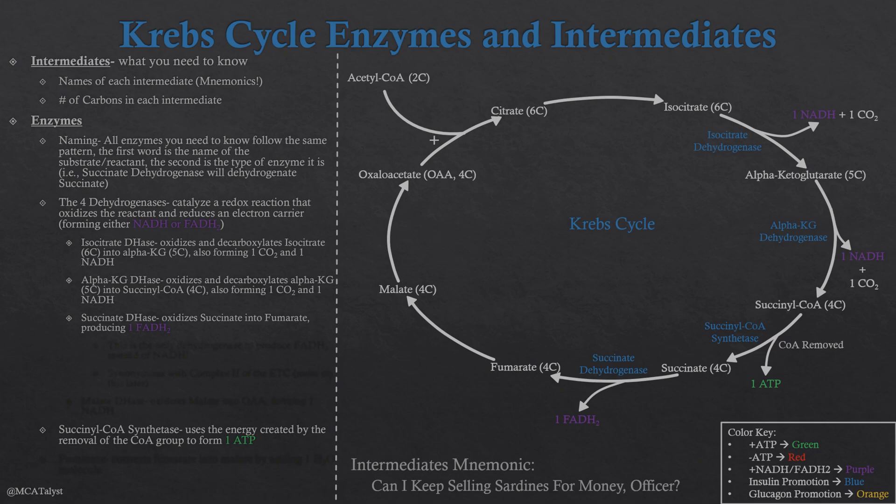Succinate dehydrogenase will oxidize succinate into fumarate, allowing us to reduce FAD+ into FADH2. This is the only step that produces FADH2. Additionally — and this will come up when we talk about the electron transport chain — succinate dehydrogenase is also basically directly part of Complex II of the electron transport chain. We'll explain why that's important when we get there, but just know succinate dehydrogenase has a role in both the Krebs cycle and the ETC.